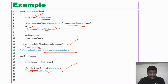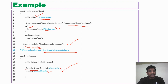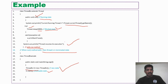With the help of this example, I explained all the states: when a thread will be in the new state, when it will be in the runnable state, when it will be in the running state, when it will be in the blocked state, and when it will be in the terminated state.